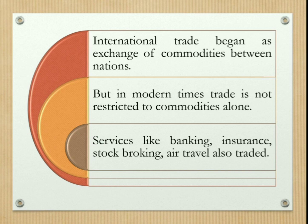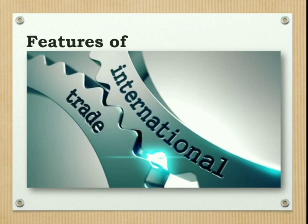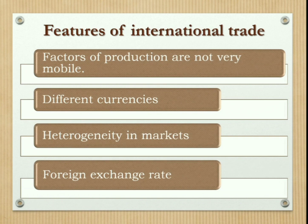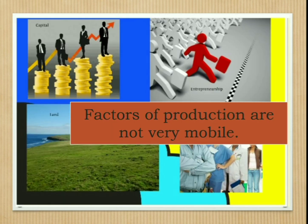In modern times, trade is not restricted to commodities alone. Services like banking, insurance, and air travel are also traded. The next feature of international trade is that factors of production are not very mobile. Factors of production are mobile within a country, but between countries there are many restrictions on factor movement. For example, labor movements are restricted through immigration laws and capital flows are regulated through currency controls and government policies.